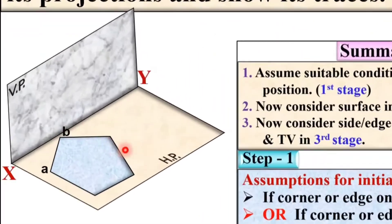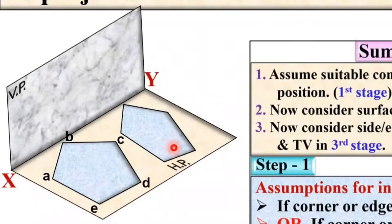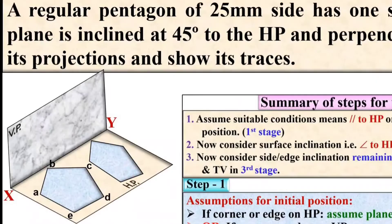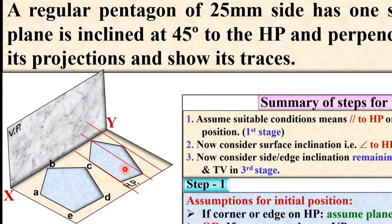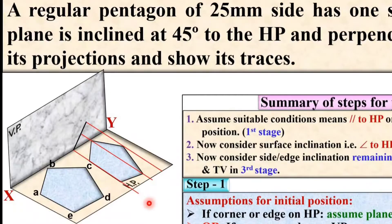Now let us give numbers to the corners of this plane — it must be in sequence and you can start from anywhere. In the second stage it must be inclined to HP, because we assumed in the first stage the plane is parallel to HP. The inclination given is 45 degrees to the HP, so in the second stage the position of the plane will be like this.